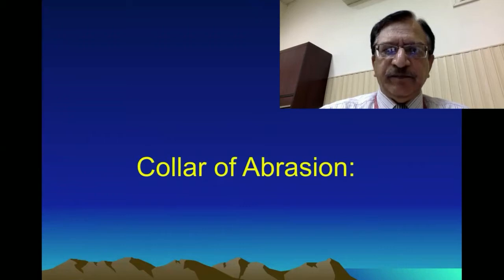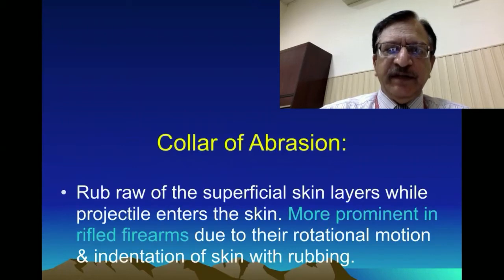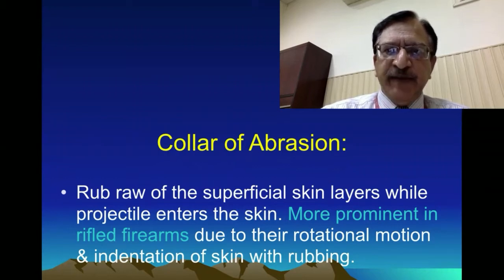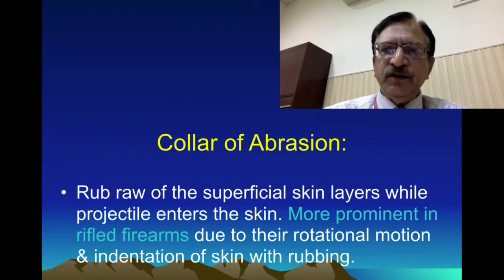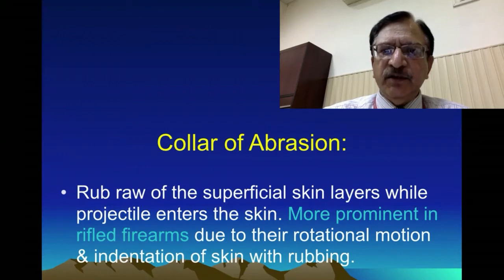The color of abrasion: it is because of the rubbing of the margin of the skin where the bullet is entering into the body. The bullet is spinning and indenting, and when it enters into the skin or body, it rubs — it indents and rubs. So the margin of the entry wound becomes abraded all around in a right-angle impact. That is known as the collar of abrasion.